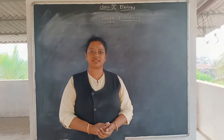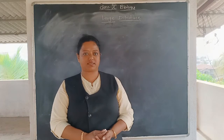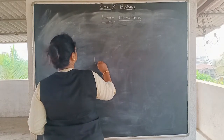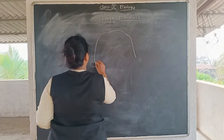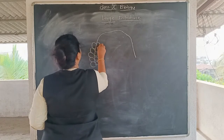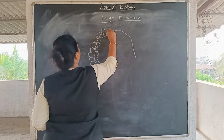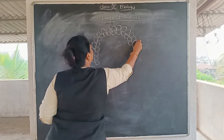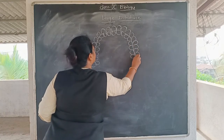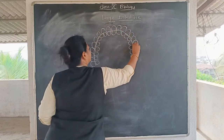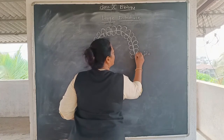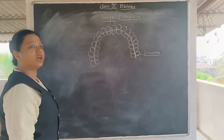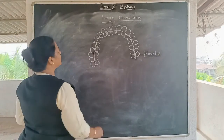Now let's start with the large intestine. There is no digestion taking place here — it is the last part of the human digestive system. As I am drawing, the large intestine is designed in this manner. This part with the swollen pouch-like structure is called a haustra. In class 10 you are not going to study haustra in detail, but you should know what it is. You will learn it properly in class 11 in human physiology. Inside it, the small intestine has a coil-like structure, as I mentioned in yesterday's session.